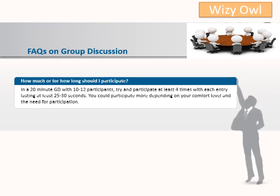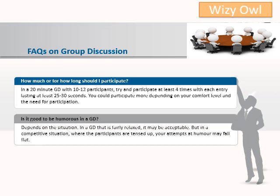How much or for how long should I participate? In a 20-minute GD with 10 to 12 participants, try and participate at least four times with each entry lasting at least 25 to 30 seconds. You could participate more depending on your comfort level and the need for participation. Is it good to be humorous in a GD? Depends on the situation. In a GD that is fairly relaxed it may be acceptable, but in competitive situations where participants are tensed up, your attempts at humor may fall flat.